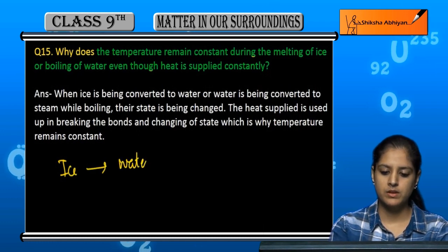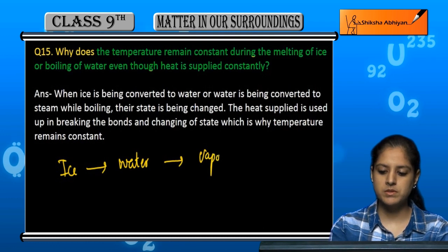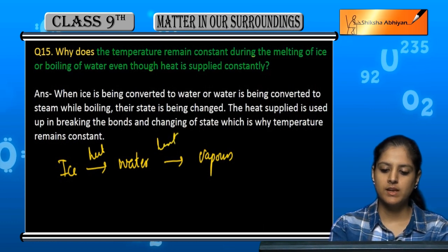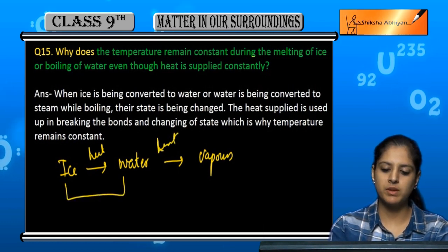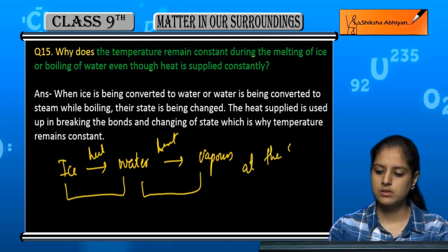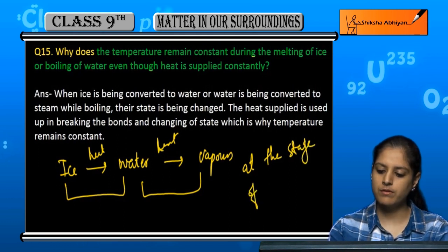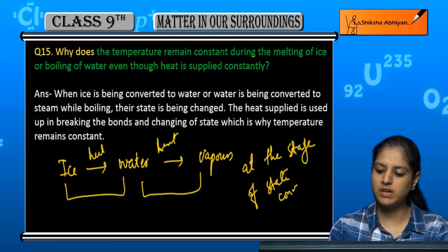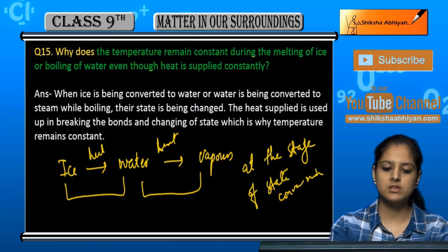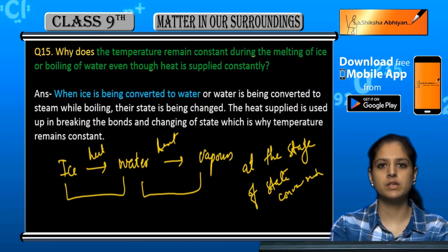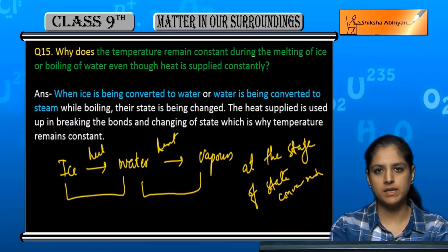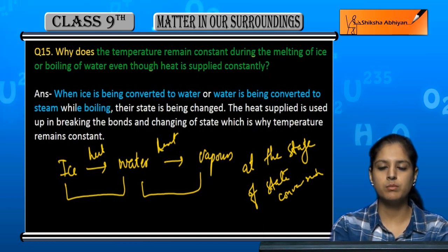When we change the water into vapours, we are obviously applying heat in both cases. But after the heat is applied, the temperature remains the same at the stage of state conversion — when ice becomes water or water becomes steam. The temperature is constant during this stage of state change.